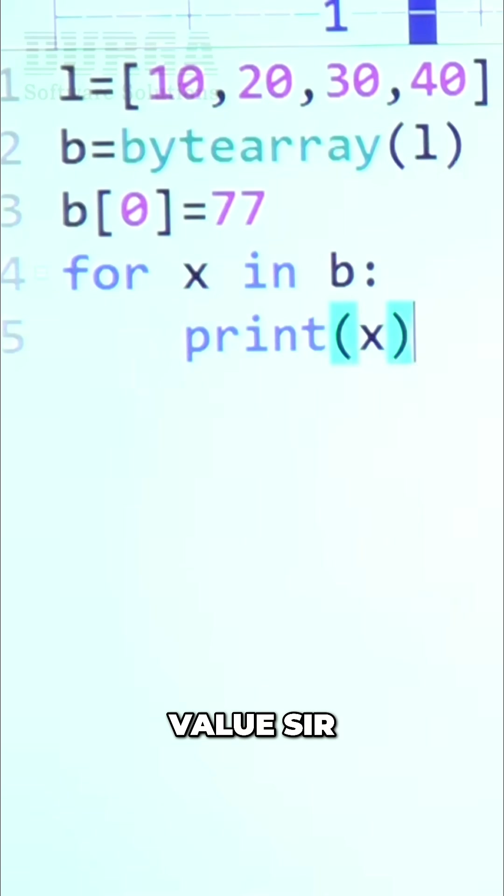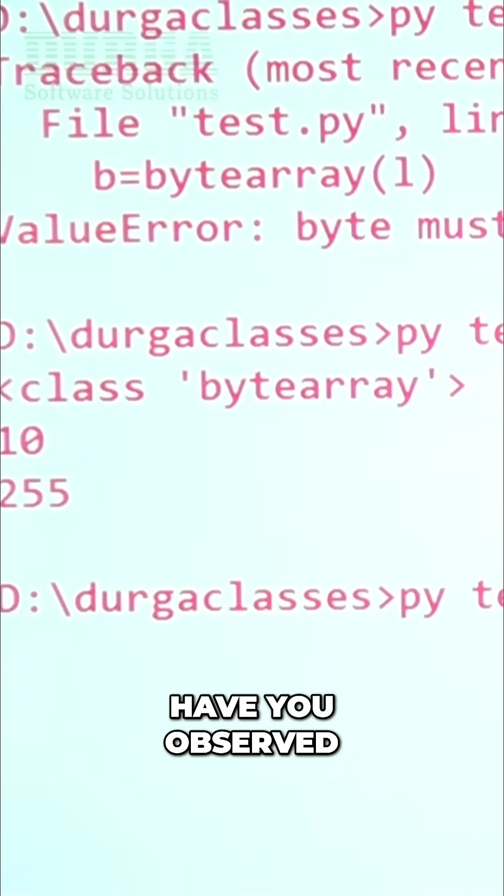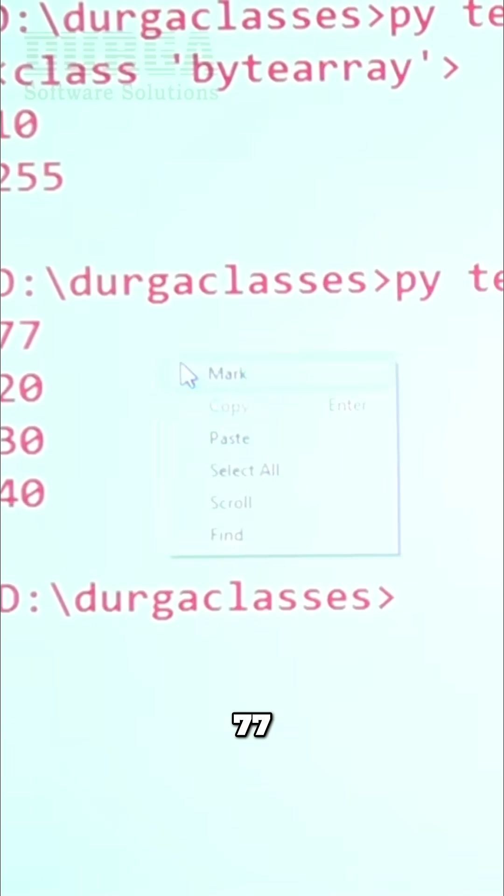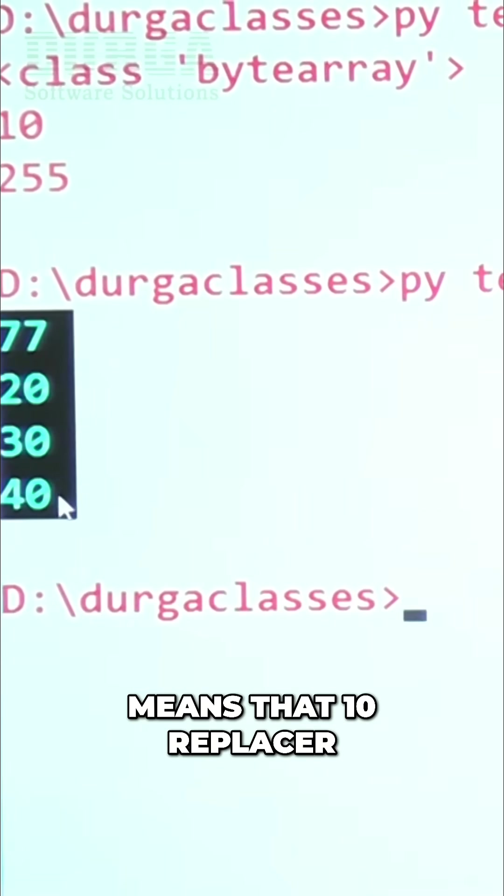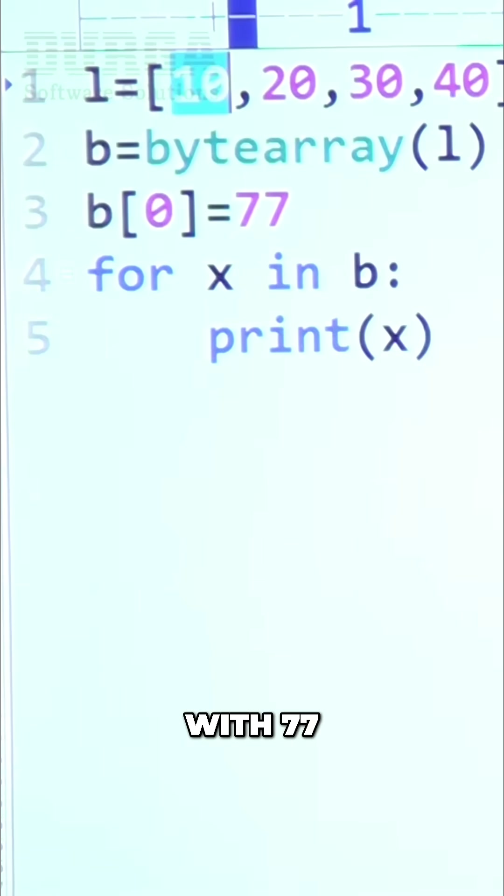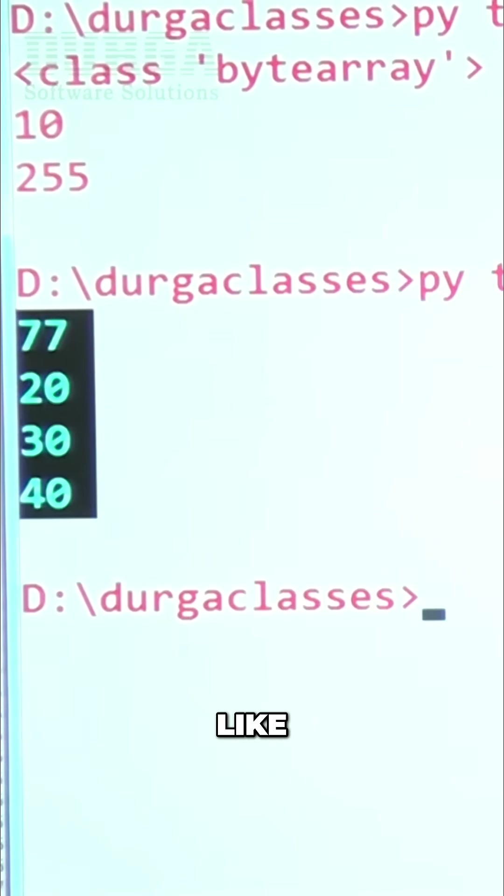Print x value. For each x in b, print(x) like this. Have you observed what is the answer? 77, 20, 30, 40. That means 10 was replaced with 77.